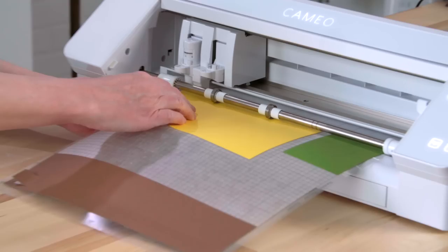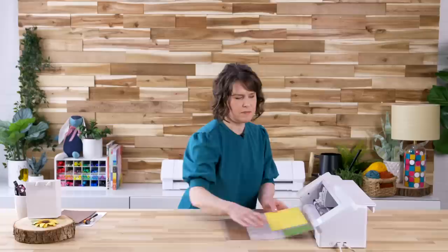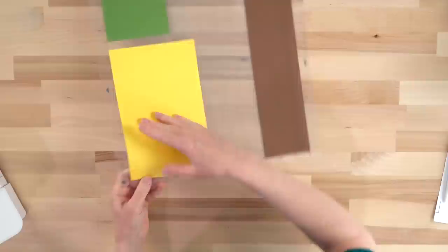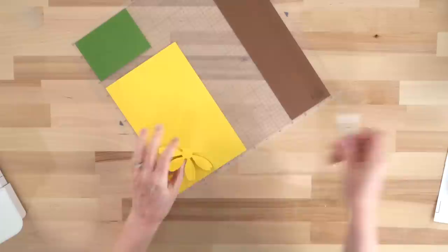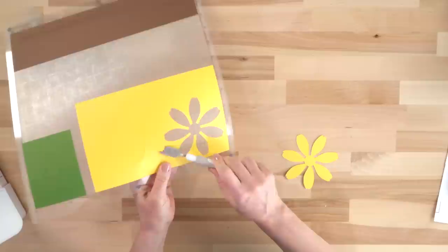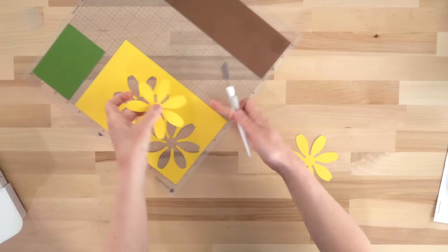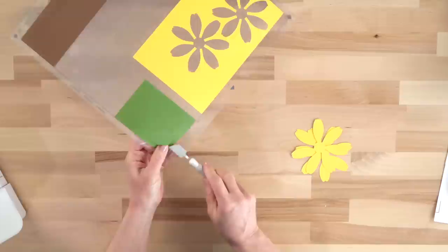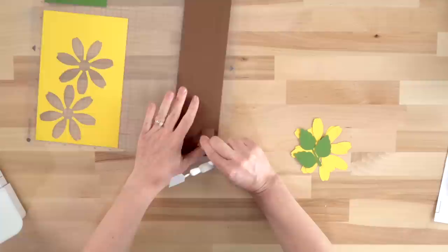All right, that's done cutting, and it looks like those cuts are good. I can tell by lifting just a little piece. So I'll unload that, and then we'll just take these pieces off the mat. You can flip your mat upside down if that helps, or you can use your spatula tool to just help pry these off. Okay, that's all we need to cut for that sunflower.